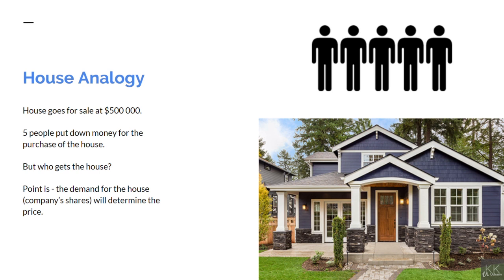Likewise, you could have a house list for five hundred thousand dollars, but the market may not look kindly on the location or the condition of the house. No one may put in an offer for five hundred thousand dollars, and the seller may only be able to get four hundred and sixty thousand dollars for the property. This is how the market works — depending on the demand of the house, or in our case a share, the price will go up or down.